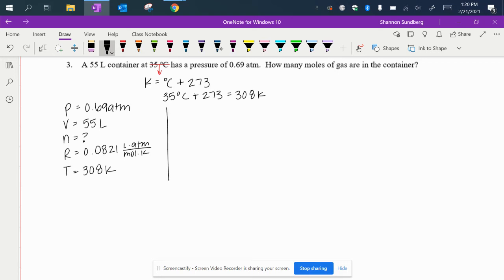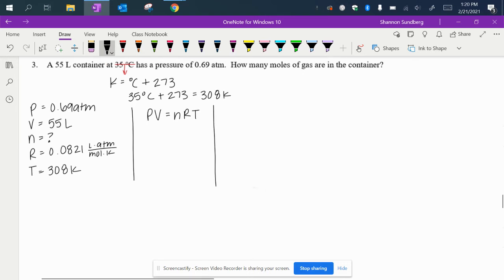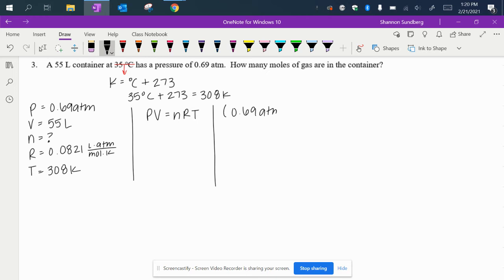We want to write out our formula. So it's PV equals nRT and then we have to sub in everything we have. So pressure is 0.69 atm. Volume is 55 liters equals n which is what we are trying to find. Our r value is 0.0821 liters times atmospheres over moles times Kelvin. And then our temperature is 308 Kelvin.